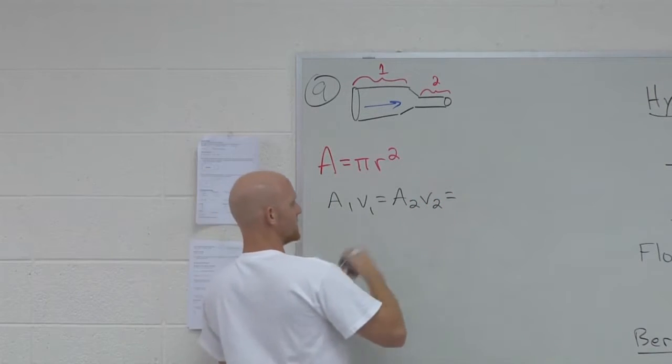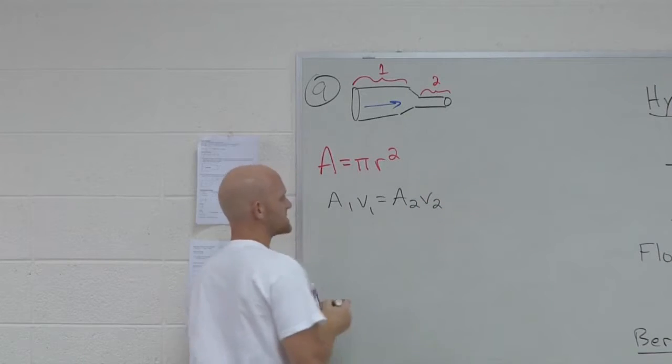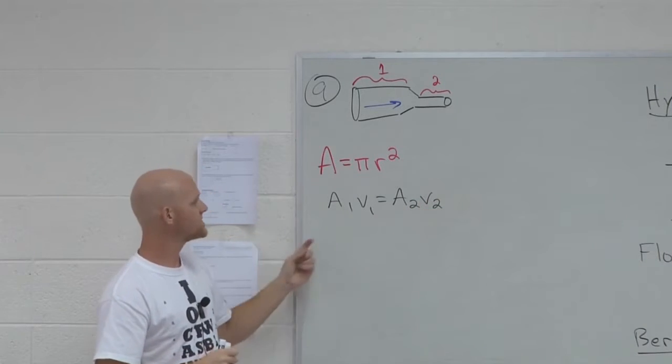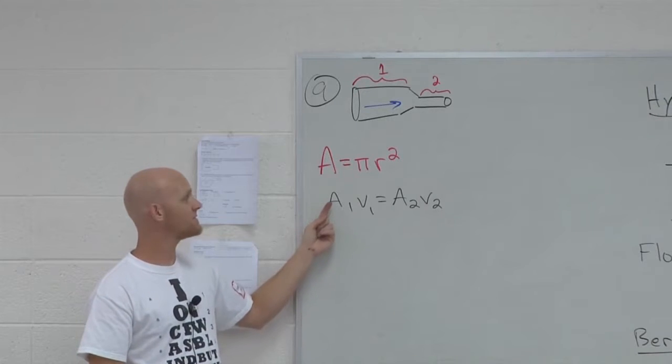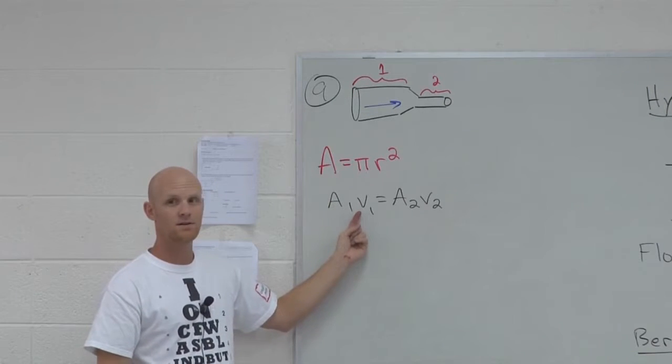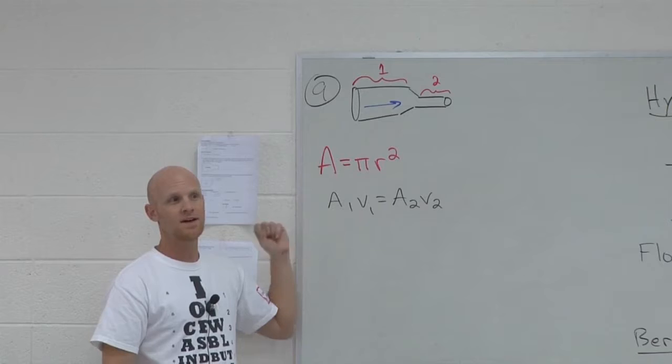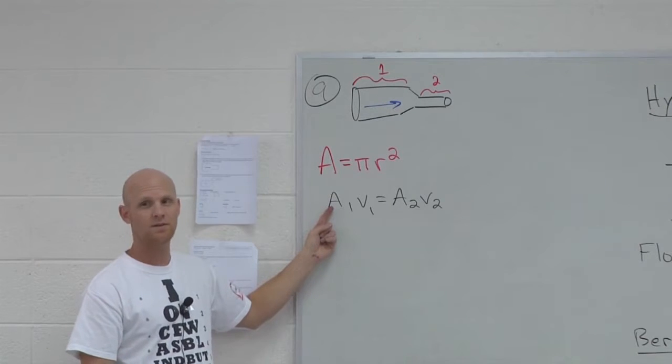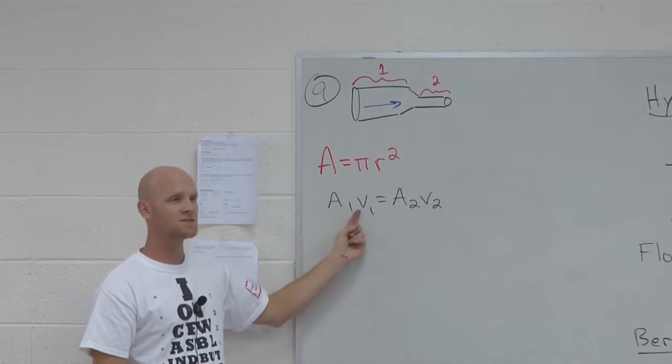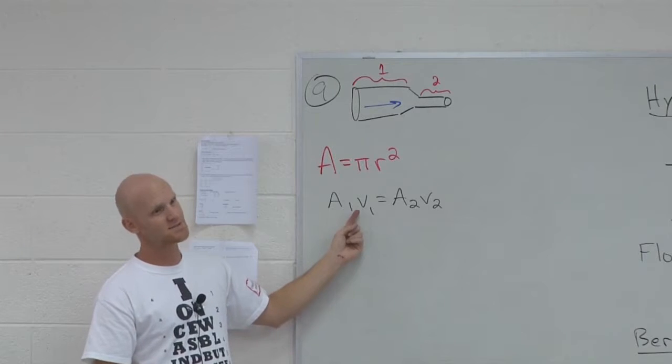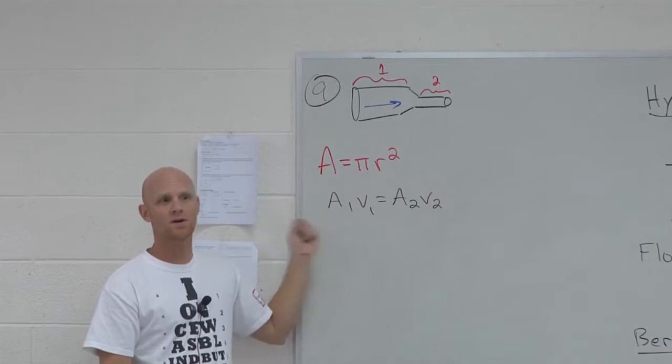I don't know why I have another equal sign in there. So, notice for these to be equal, region one has a larger area. For region one to have a larger area, it must have a smaller velocity. In this case, how many times bigger is the area? Nine times bigger. Then how many times less must be the velocity? Nine times less. That's exactly how that works.